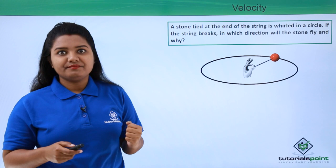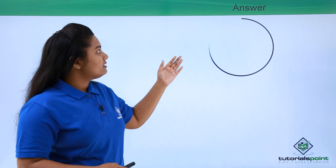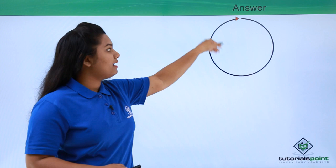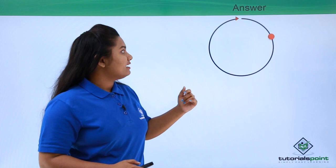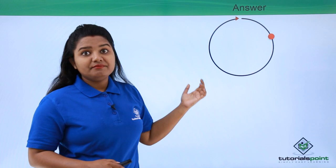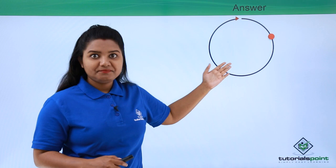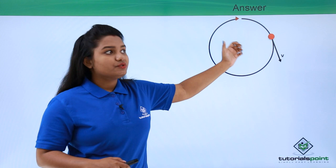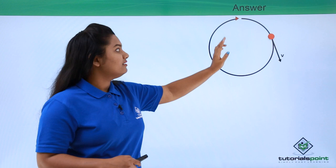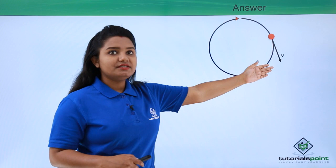Let's say we have a circular path in which the stone is whirled along with the string. Suppose at a certain instant of time the stone is at a particular point on the circle. We know from the previous video that the direction of velocity of an object in circular motion at any instant is tangential to the point at which it is located. So the direction of velocity and motion of the stone at that instant will be along the tangent at that point.